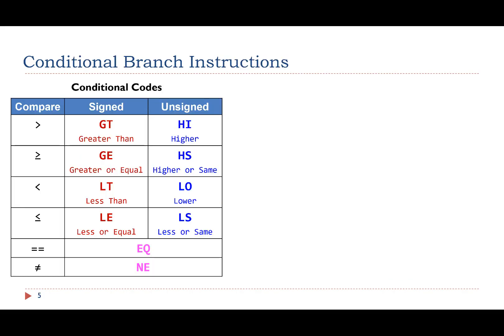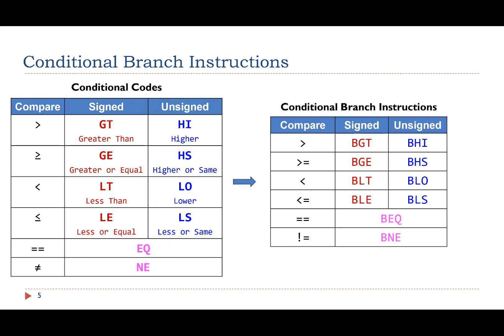Here are the conditional codes for signed comparison. Here are the conditional codes for unsigned comparison. If we add a B before these conditional codes, we can obtain conditional branch instructions.